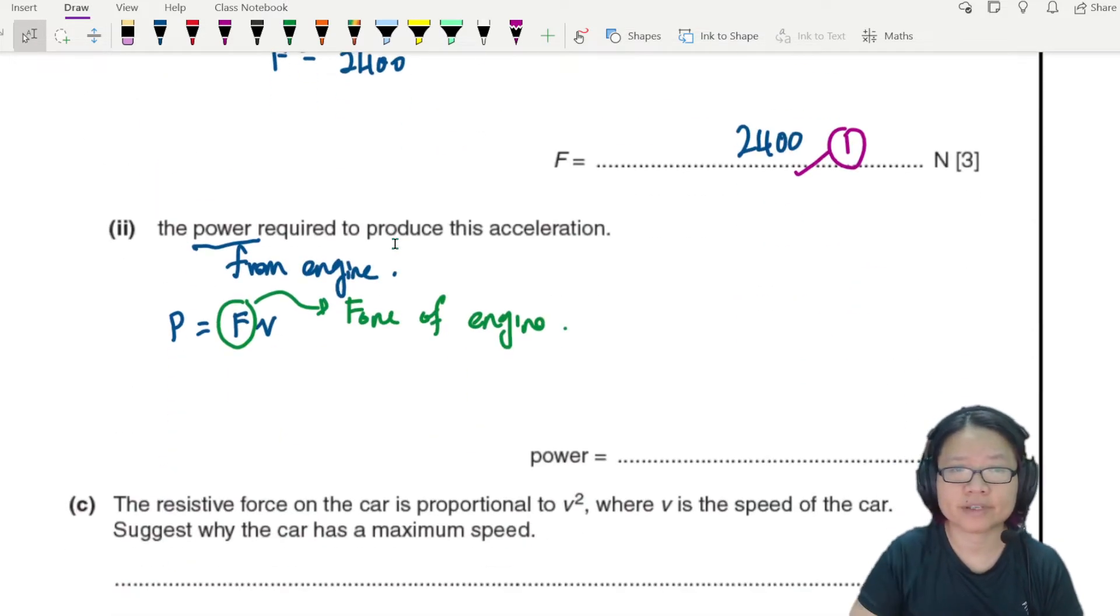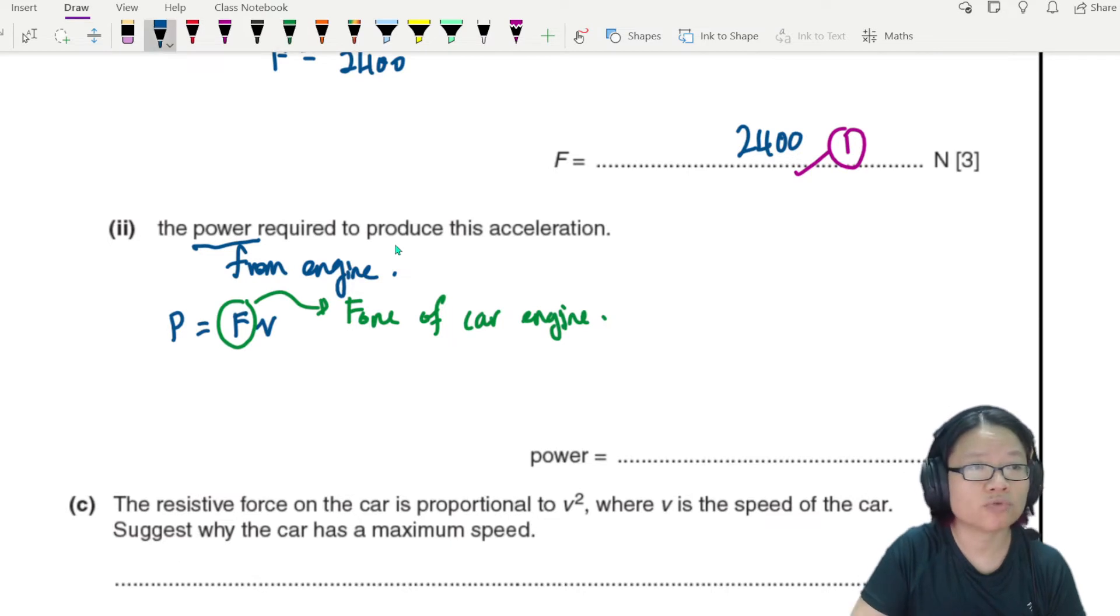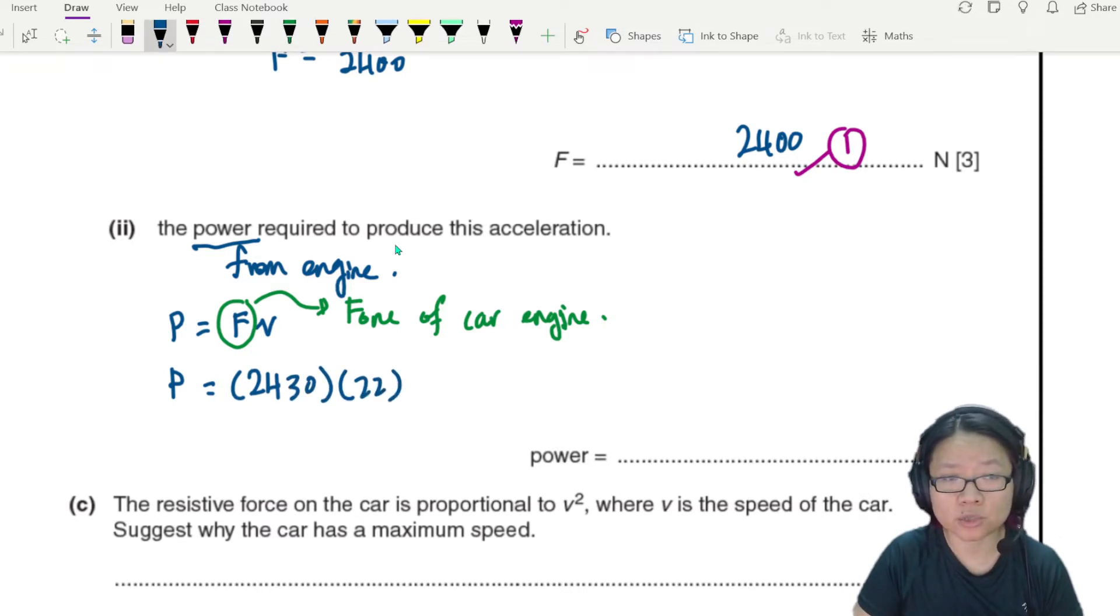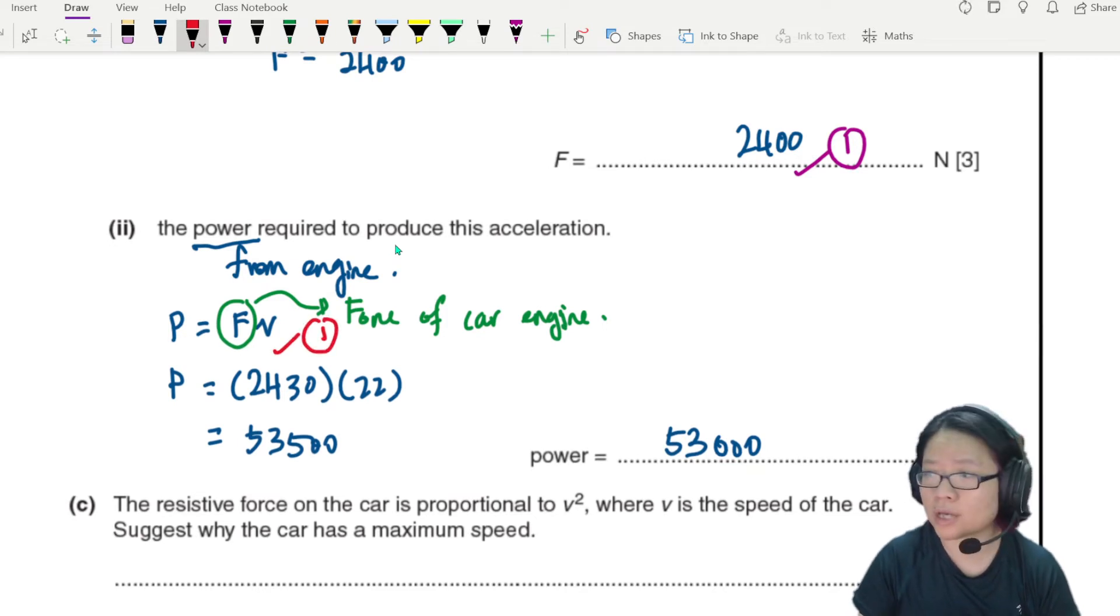Force required from the car engine, and we can substitute the 2400 or you could put 2430. I'll put 2430 times the speed 22. This will give you 53,460 or two significant figures 53,000. This is what is expected. We will use FV and then you can substitute